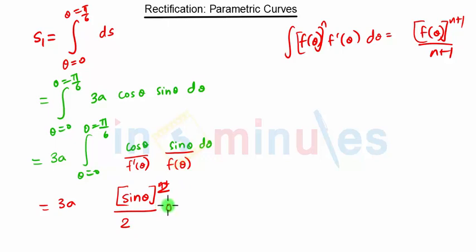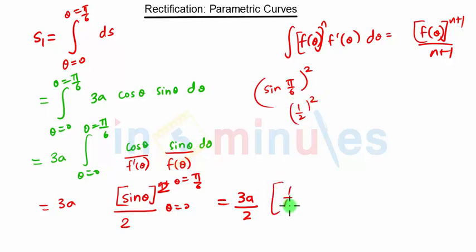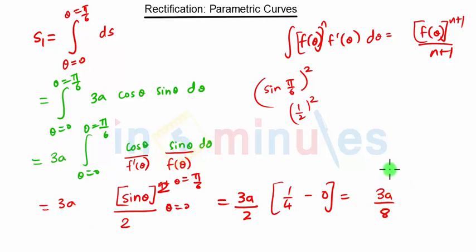Applying the limits, we have 3a/2 multiplied by the result. When we put θ = π/6, we get sin²(π/6) = sin²(30°) = (1/2)² = 1/4. When we put θ = 0, we get sin²(0) = 0. So S1 = 3a/2 × 1/4 = 3a/8. Remember, S1 = 3a/8.